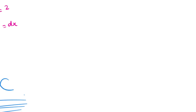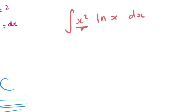Integration by parts — my favourite — is essentially when you have a product. For example, the integral of x²·ln x dx. We have a terminating product: x² differentiates to 2x, which differentiates to 2, so it will eventually disappear. When the product doesn't terminate, that's when you get those looping ones — like e^x · sin x — where differentiating and integrating cycle through the same functions.